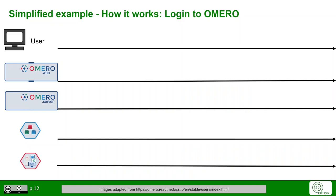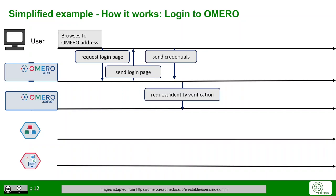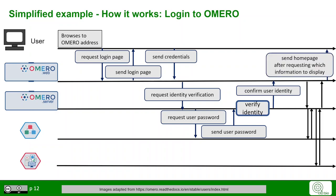Now two simplified examples to understand how OMERO works. First, the login process: a user browses to the OMERO Web address, which sends a request for the login page so the user can enter credentials. The credentials must then be verified, for which OMERO Server requests the user password from the relational database. The database sends back the password so it can be verified by the middleware software. Thus, the user identity is confirmed and the homepage with all relevant information can be displayed.